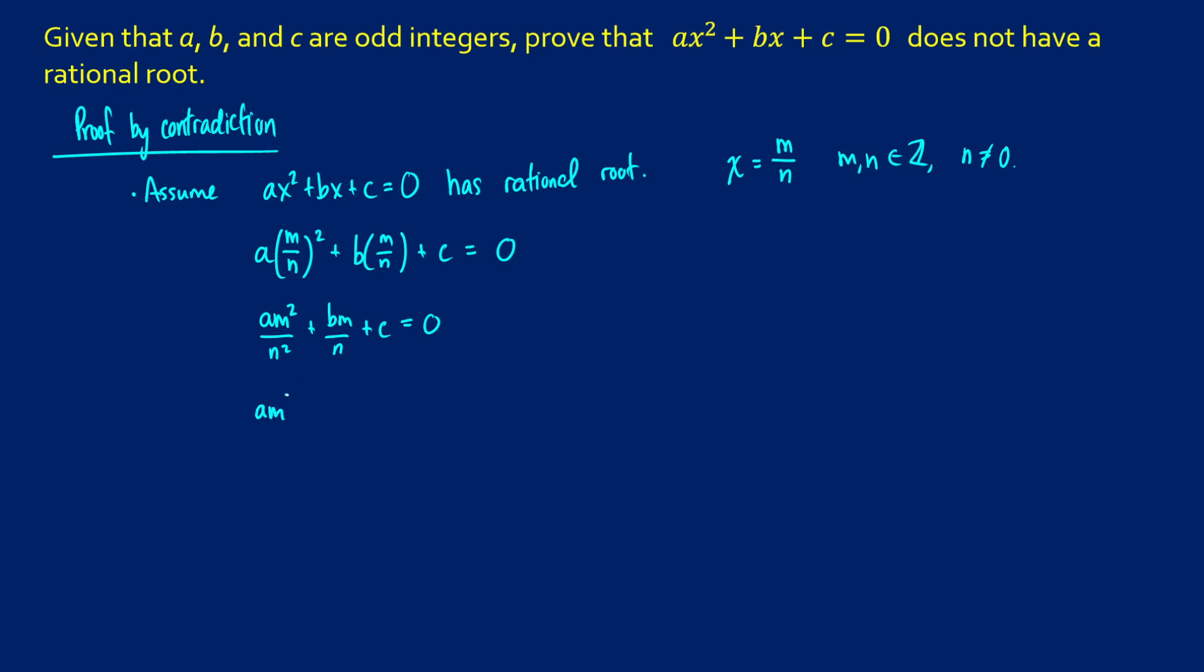So what we're going to get then is am squared plus bm times n, since n squared divided by n gives you n, and plus cn squared, and this will be equal to 0 times n squared, which is just 0.